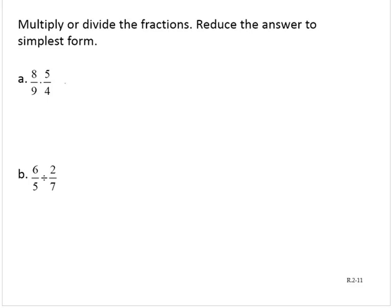So 8 ninths times 5 fourths is 8 times 5 over 9 times 4. Now, we could multiply this out and write it as 40 over 36. But if there are common factors, we should remove them now.